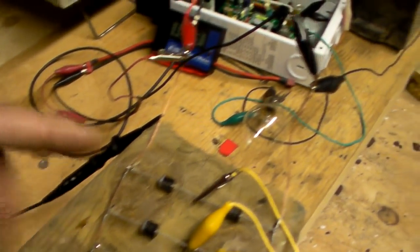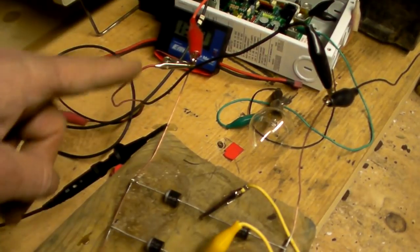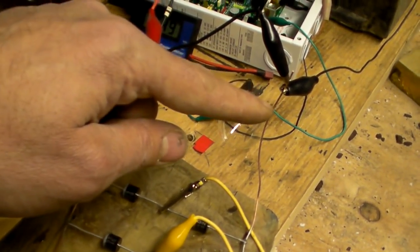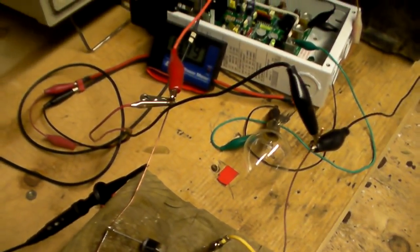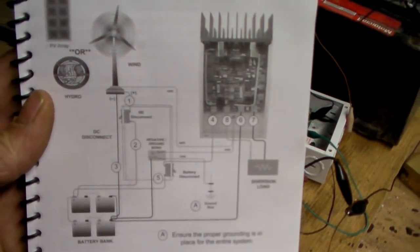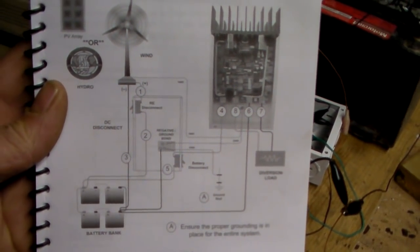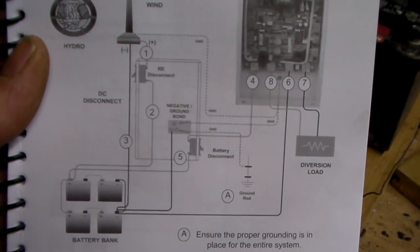So it comes out of here. We have a positive, negative and it's all set up as for this diagram. The light bulb down there is the dump load.